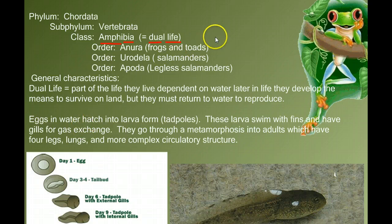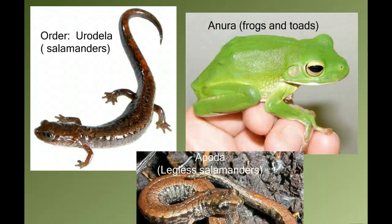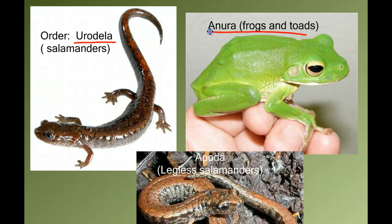These are the frogs and toads, the salamanders, and the legless salamanders. In this class, I'm going to ask you to know the specific orders. The order Anura for the frogs and toads, the order Urodela for the salamanders, and the order Apoda for the legless salamanders.